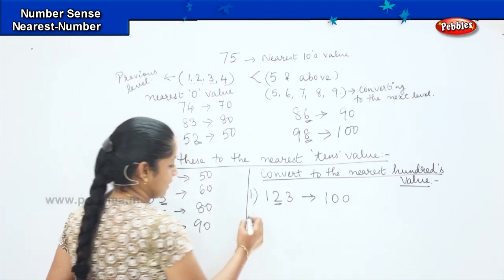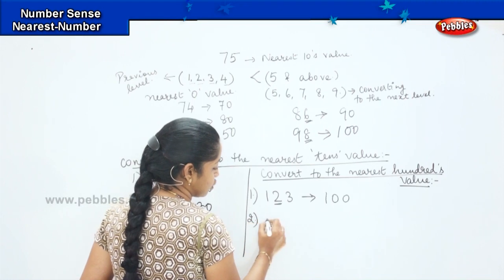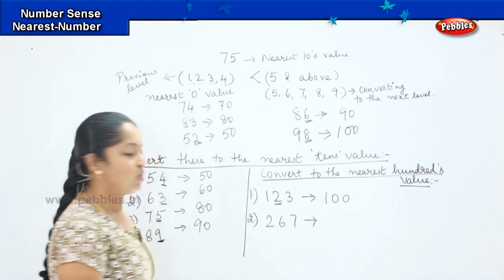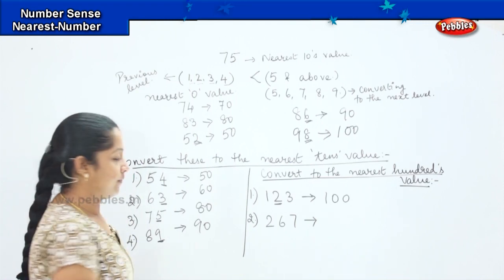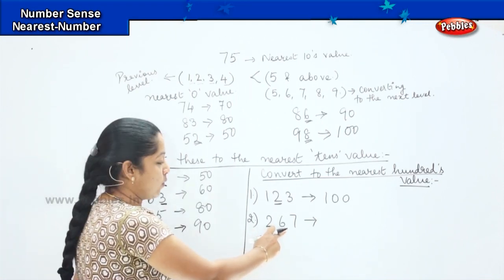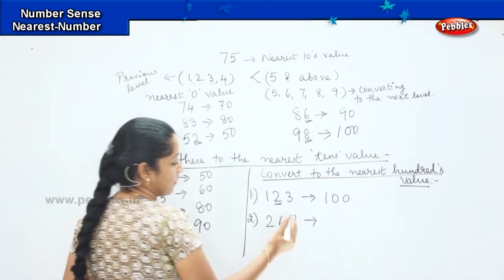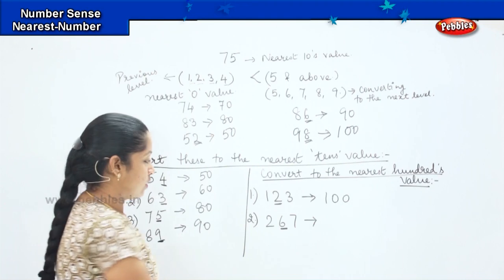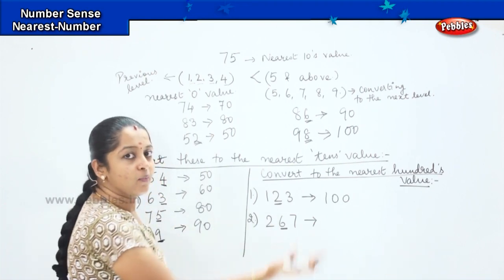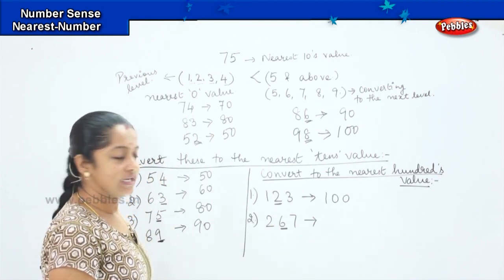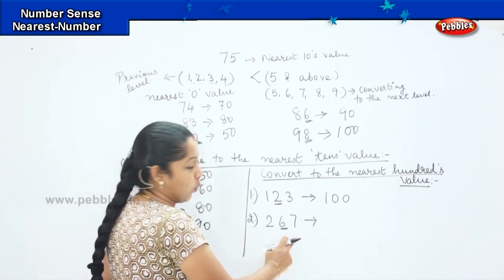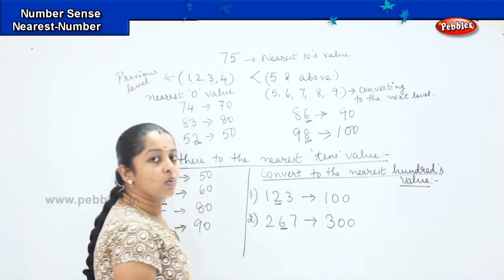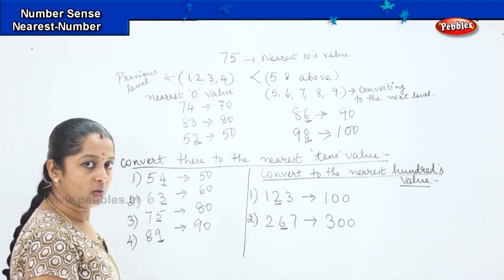Next, take 267. The hundreds digit is 2, and the tens digit is 6. Since 6 is greater than 5, we round up to the next level. So 267 is rounded to 300 because the tens digit 6 is greater than 5.